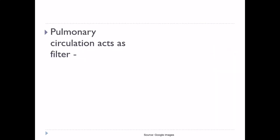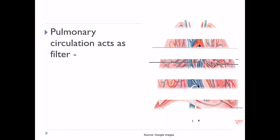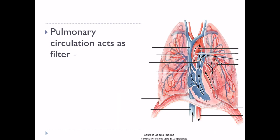Second function of pulmonary circulation: it acts as a filter, filtering blood clots, detached cancer cells, fat cells, gas bubbles, agglutinated RBCs, masses of platelets, and debris from stored blood.